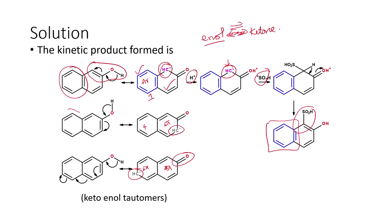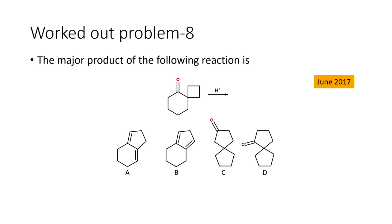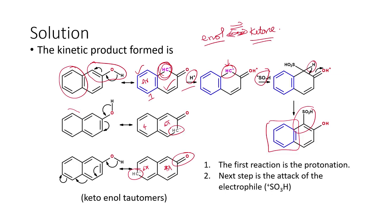The overall reaction sequence is: protonation of the system, attack of the electrophile (sulfonic acid cation), loss of hydrogen (proton shift), and shift of the double bond toward the electronegative oxygen — restoring the enol (naphthol) system. The kinetic product is the 1-sulfonated 2-naphthol derivative.